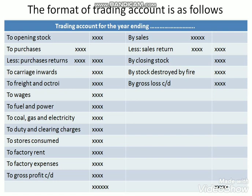Only direct expenses are carried to the trading account; indirect expenses go to the profit and loss account. In case a fixed asset is purchased, those expenses are carried as indirect expenses and added to the particular asset in the balance sheet. Freight and octroi, if directly connected with purchases, are entered into the trading account.